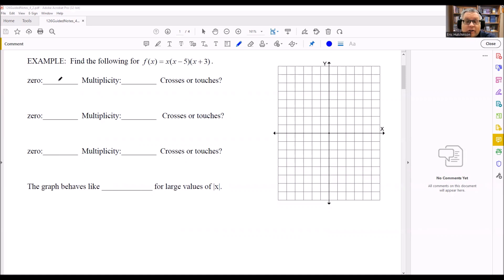So the first thing is we want to find the zeros. Now the zeros are the x-intercepts. It's basically what makes each individual part here equal to zero. So you can imagine just setting each of these equal to zero to get the answer.